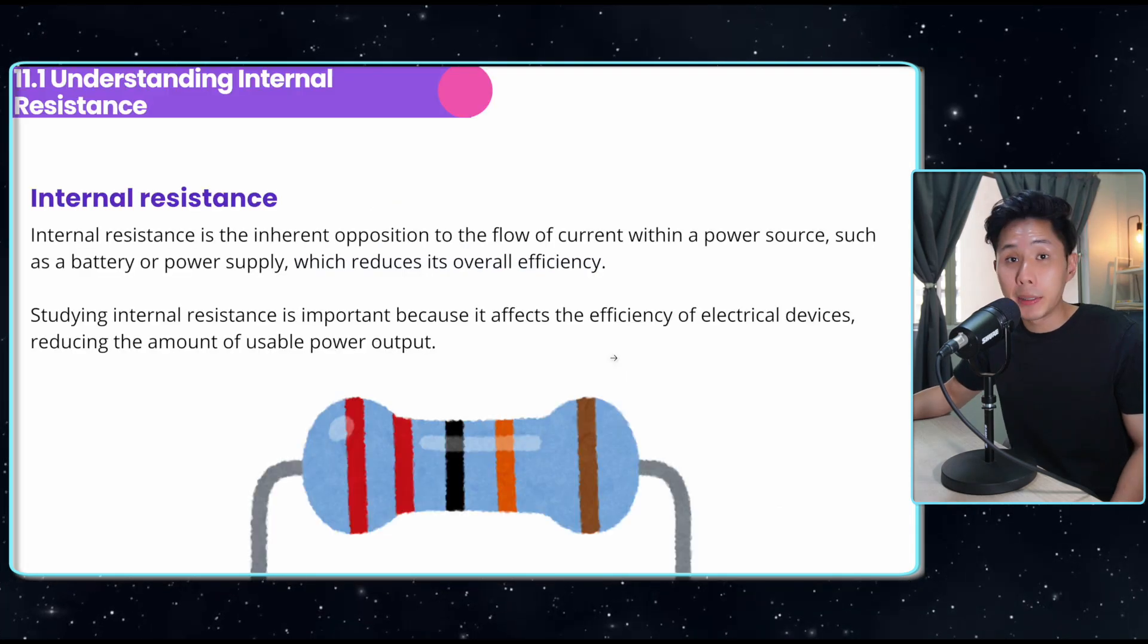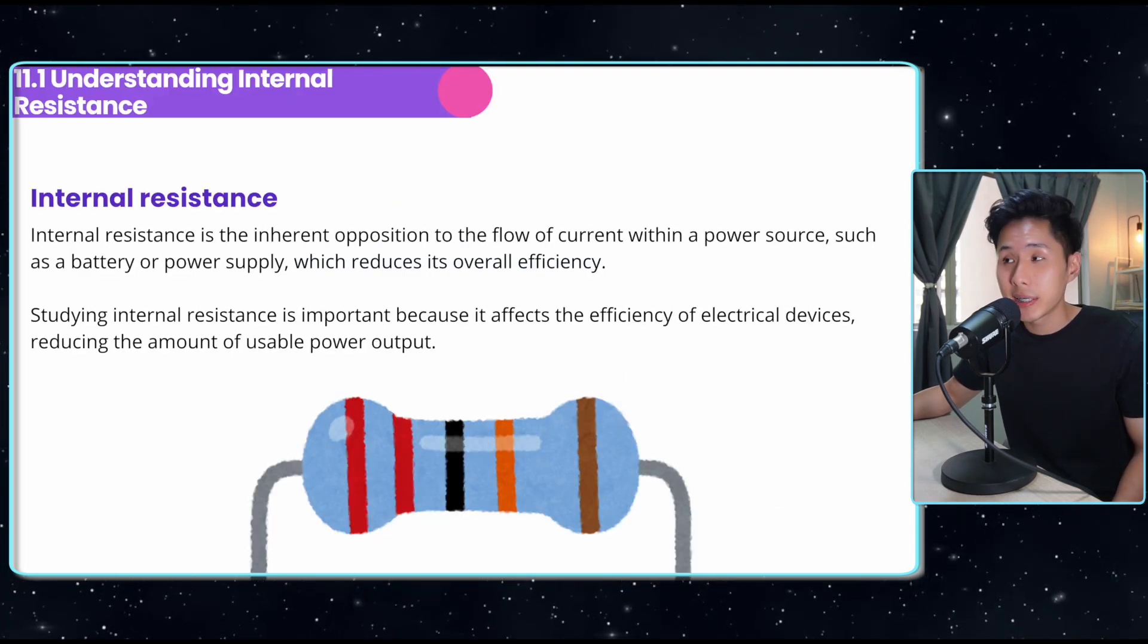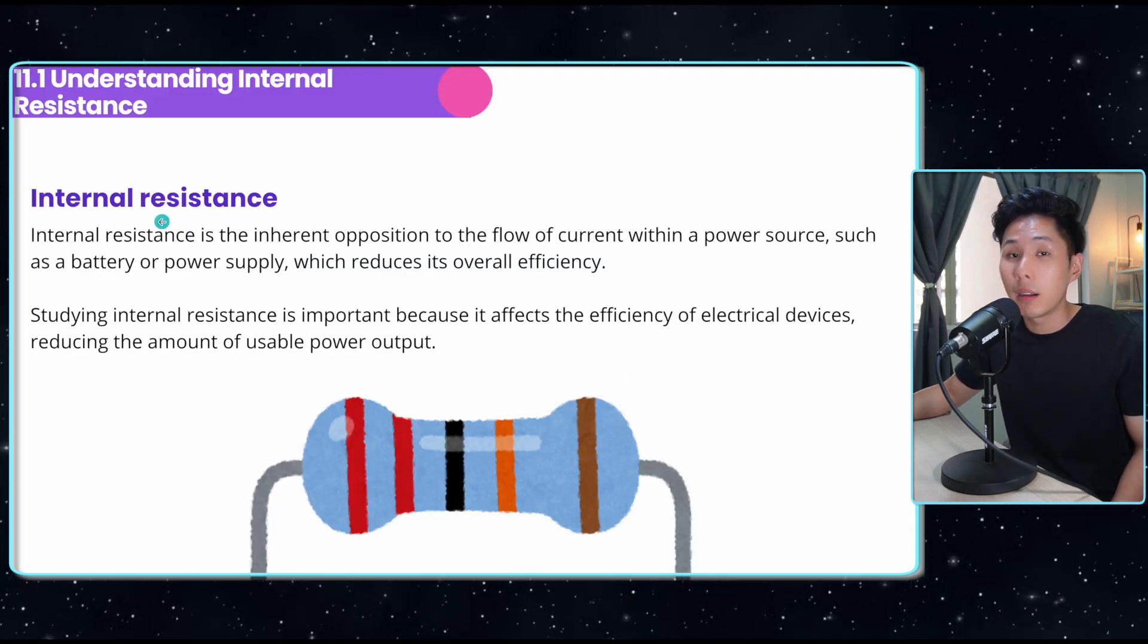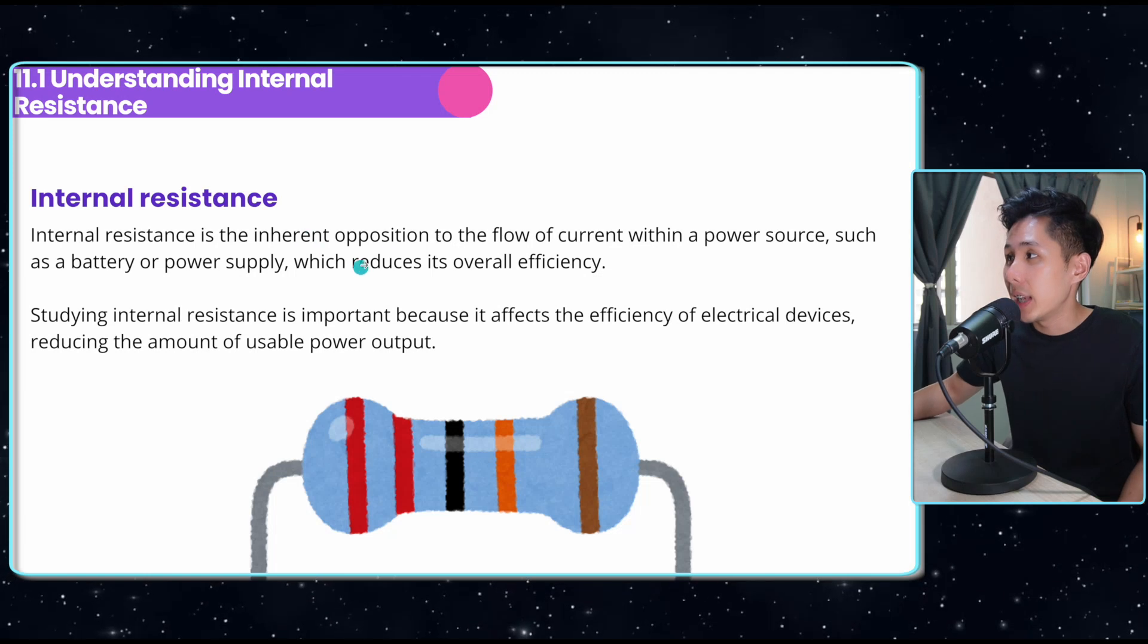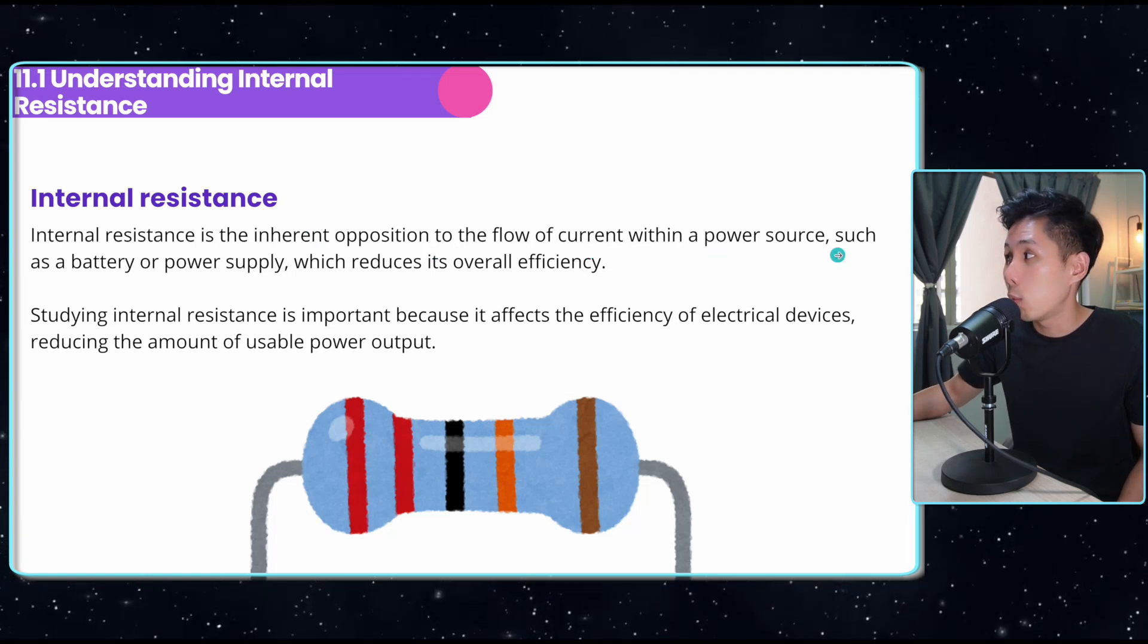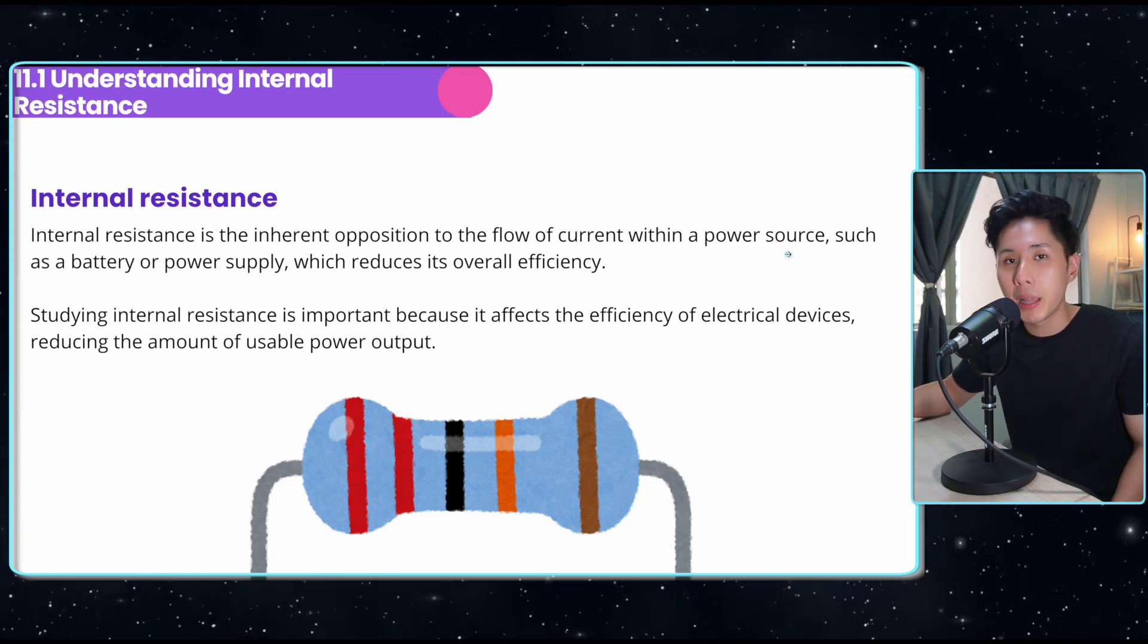And this is the chapter. In the last video, we talked a lot about resistance. Today we're going to talk about internal resistance. It is the inherent opposition to the flow of current within a power source, like a power supply or a battery.